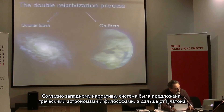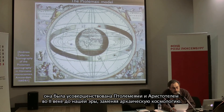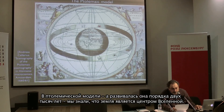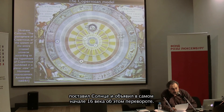According to Western narration, the geocentric system was proposed by Greek astronomer Eudoxus of Knidos, in touch with the idea proposed by his mentor Plato, and later perfected by Aristotle and especially Hipparchus and Ptolemy in the 2nd century AD, quickly replacing the archaic cosmology. In the Ptolemaic model, which remained in vogue for about 2,000 years, Earth is the center of the Universe. This model was put in crisis by the Copernican model, which instead puts the Sun in the center of the Universe.